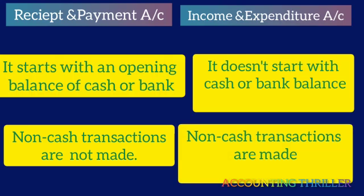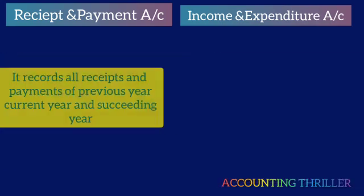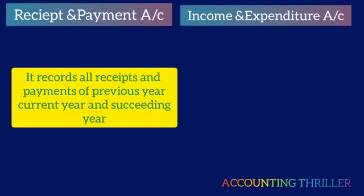In the Income and Expenditure Account, non-cash transactions are made. All adjustments are included in the Income and Expenditure Account. Receipt and Payment Account records all receipts and payments of the previous year, current year, and succeeding year.